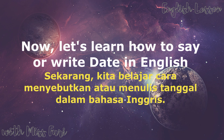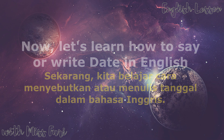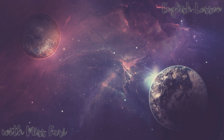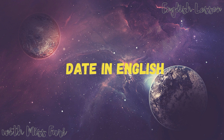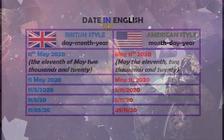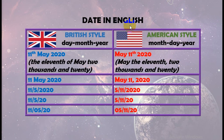Sekarang kita belajar cara menyebutkan atau menulis tanggal dalam bahasa Inggris. Date in English. There are two styles used to say date in English: British style and American style. Dalam bahasa Inggris, ada dua gaya yang digunakan untuk menyebutkan tanggal: British style dan American style.